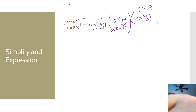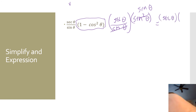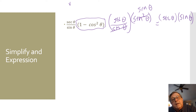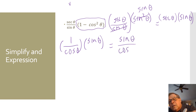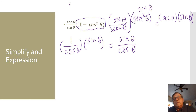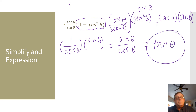So now we've got secant of theta times sine of theta. What is secant of theta? By the reciprocal identity, secant of theta is 1 over cosine of theta, and that's times sine of theta. Distributing, we get sine of theta over cosine of theta — and that looks familiar, because that equals the tangent of theta. Sine over cosine — and we've simplified that expression.